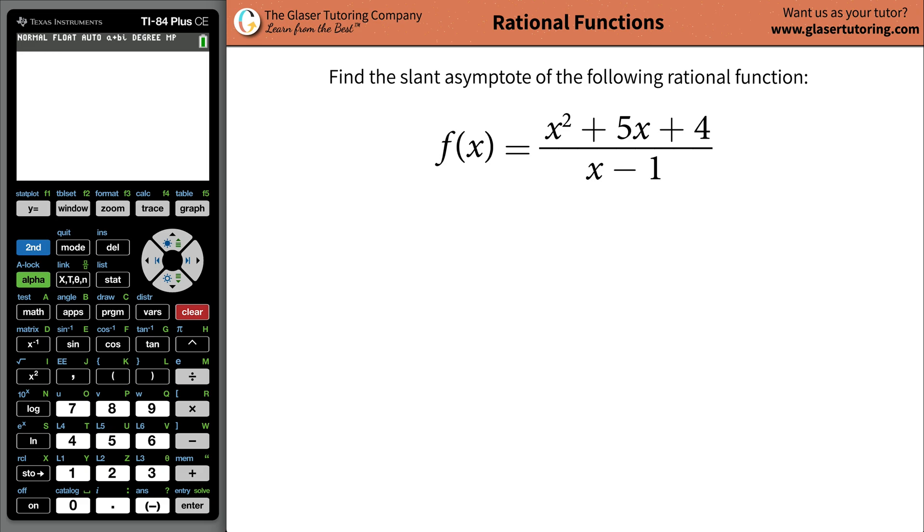Good morning, good afternoon, and good evening to wherever you are in the world. I'm Andrew Glazer, and today I want to teach you how to find the slant asymptote of the following rational function: x squared plus 5x plus 4 divided by x minus 1.